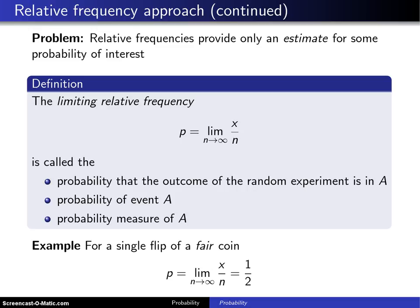So there is some interest in what is known as the limiting relative frequency, and that's what's defined here. P is the limit as our number of trials goes to infinity of x, the number of events of interest that occur, divided by n, the number of trials.